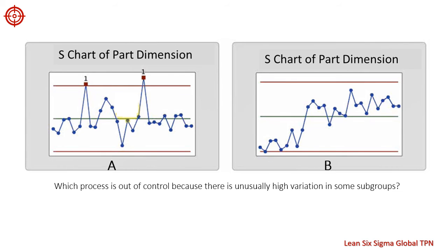For example, look at this S chart. Which process is out of control? Process A is the correct answer, because there is unusually high variation in some subgroups. The points above the upper control limit indicate unusually high variation. In this S chart, subgroups 7 and 18 have much larger standard deviations than expected. We should investigate the production process further to determine the precise cause.